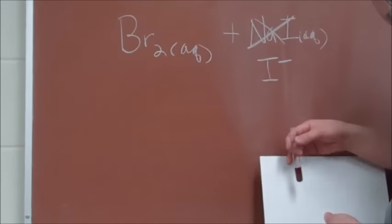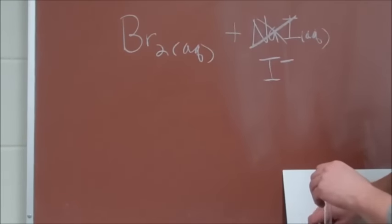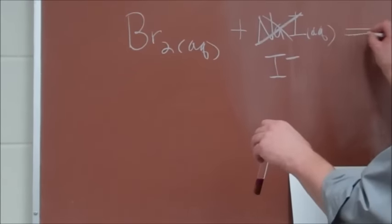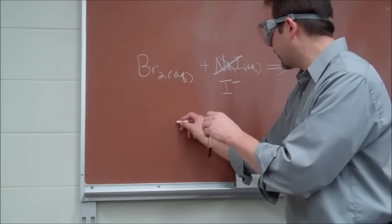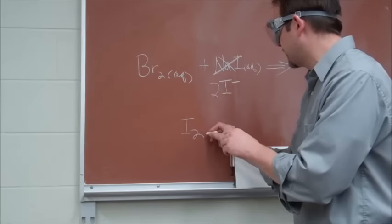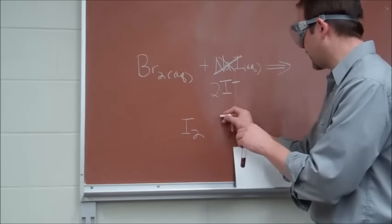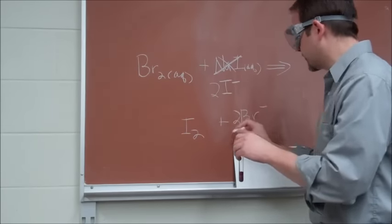That means a reaction took place. The hexane layer now has, and we'll move it down here. The reaction took place and converted the iodide, two of those, into iodine. And that's in the hexane layer. And it also formed bromide ions, two of them.